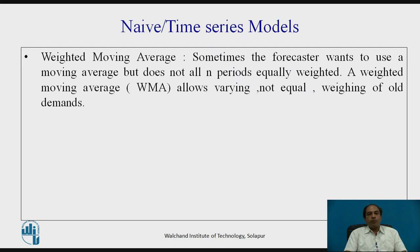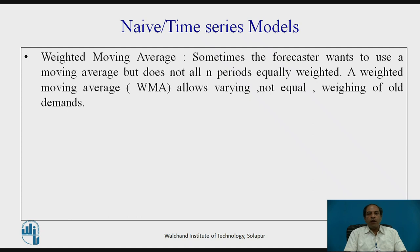A further improvement is the weighted moving average method. Simple moving average gives equal weight to all periods and does not discriminate between the latest and earlier data. Weighted moving average assigns different weightage — the most recent data gets higher weight while older data gets lower weight. This method allows varying, non-equal weighting of older demands when the forecaster does not want all n periods equally weighted.